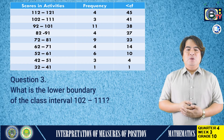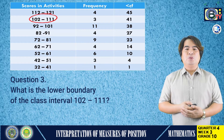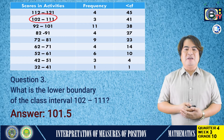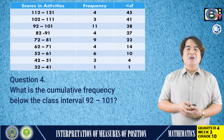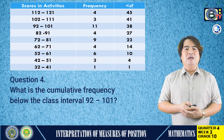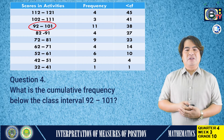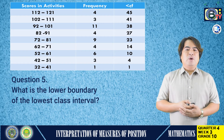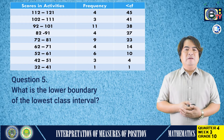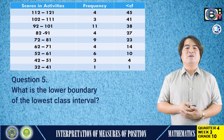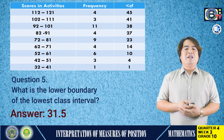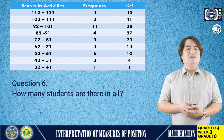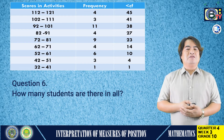Question number three: What is the lower boundary of the class interval 102 to 111? The answer is 101.5. Question number four: What is the cumulative frequency below the class interval 92 to 101? The answer is 27. Question number five: What is the lower boundary of the lowest class interval? The answer is 31.5. Question number six: How many students are there in all? The total number of students is 45.